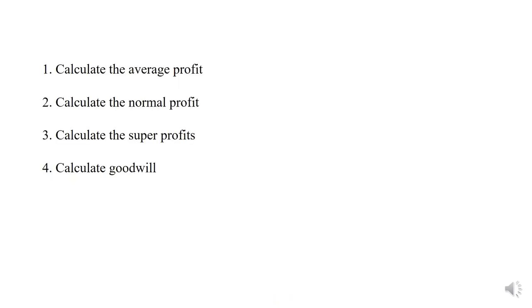For calculating goodwill on the super profit method, you have to follow these four steps. The first step is to calculate average profit. To calculate average profit, add the profits of the past years given in the question, divided by the number of years.